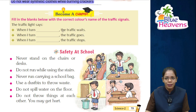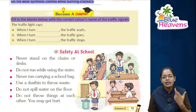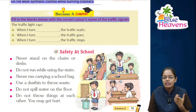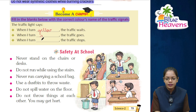Let's become a champ — fill in the blanks with the correct color names of the traffic signals. When the traffic light turns red, the traffic waits. When it turns green, the traffic goes. When it turns yellow, it gives a ready signal. The answers are: red — wait, green — go.